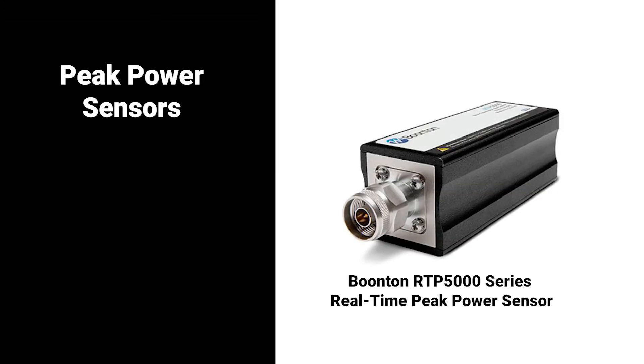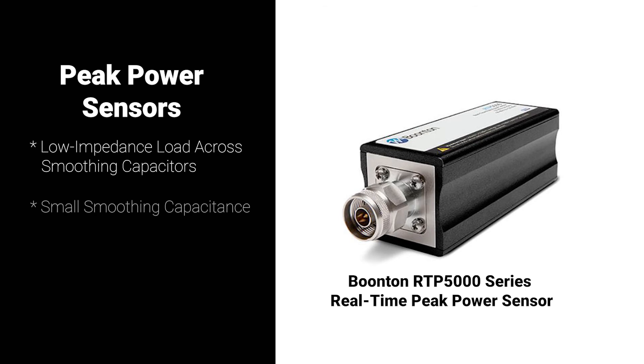Peak power sensors use a low impedance load across the smoothing capacitors to discharge them very quickly when the RF amplitude drops. This, in combination with a very small smoothing capacitance, allows peak power sensors to achieve fast rise times and wide video bandwidths.